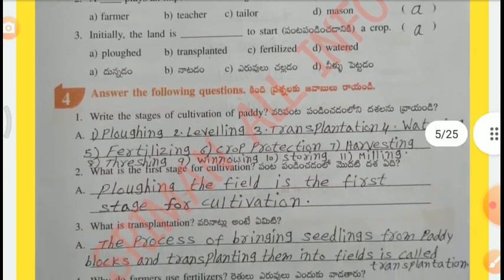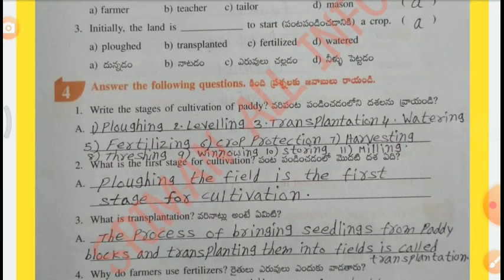Question 4 — Answer the following questions. Write the stages of cultivation of paddy: 1st Plowing, 2nd Leveling, 3rd Transplantation, 4th Watering, 5th Fertilizing, 6th Crop Protection, 7th Harvesting, 8th Threshing, 9th Winnowing, 10th Storing, 11th Milling. Question 2: What is the first stage of cultivation? Plowing the field is the first stage of cultivation.